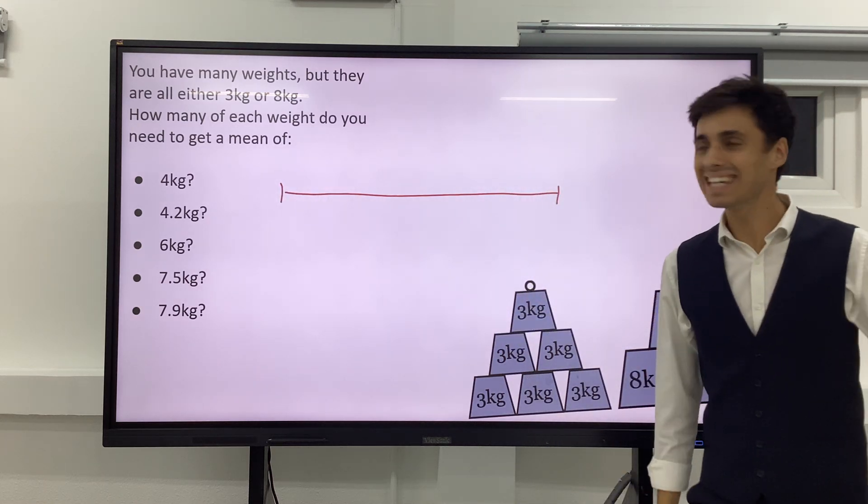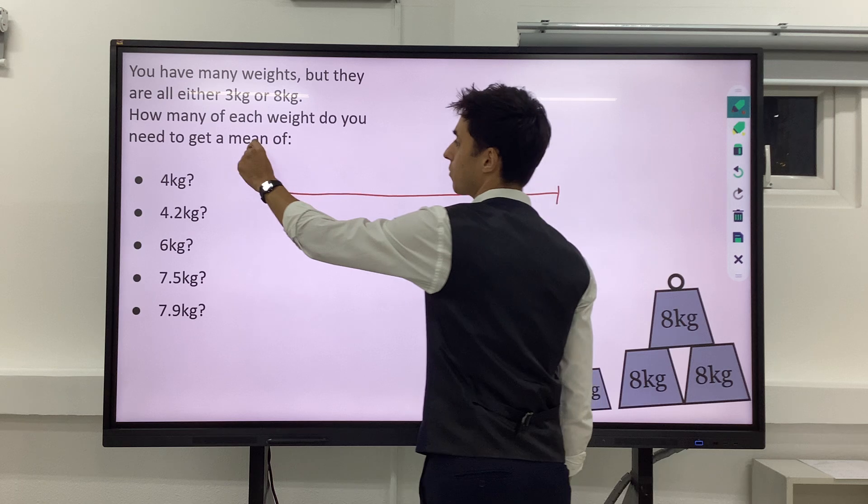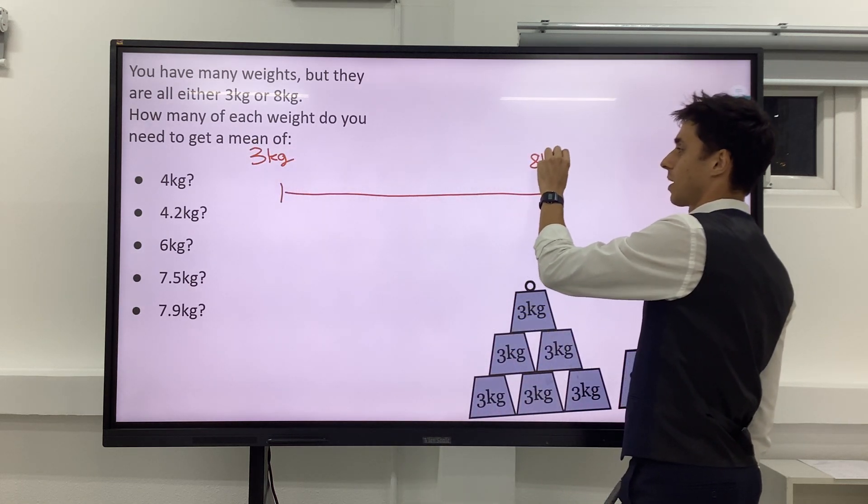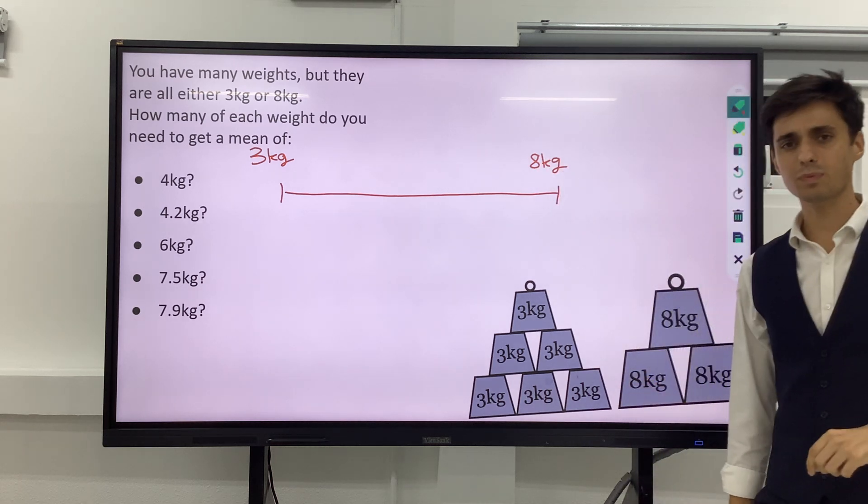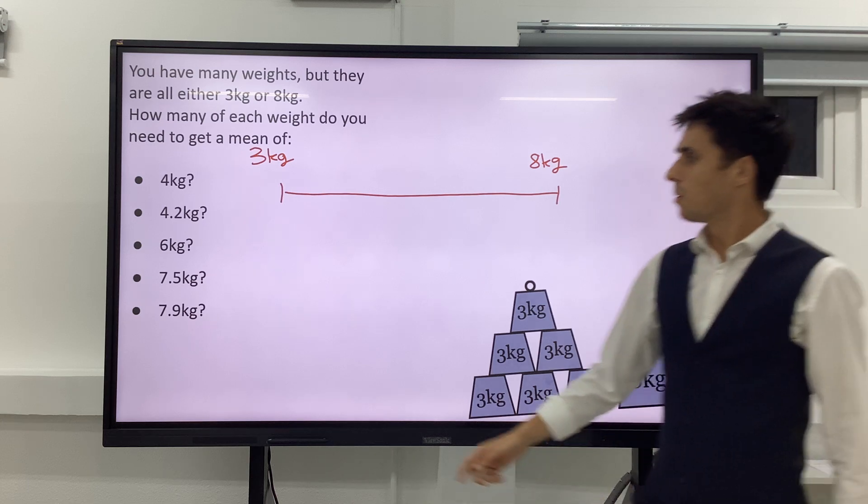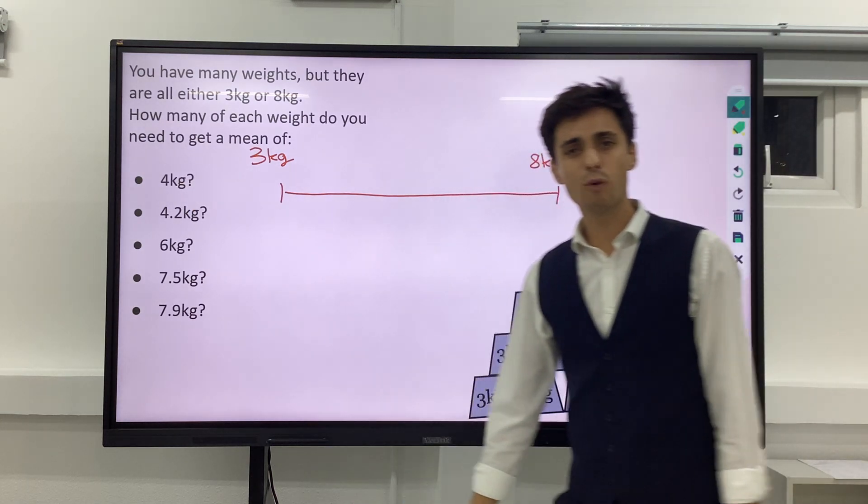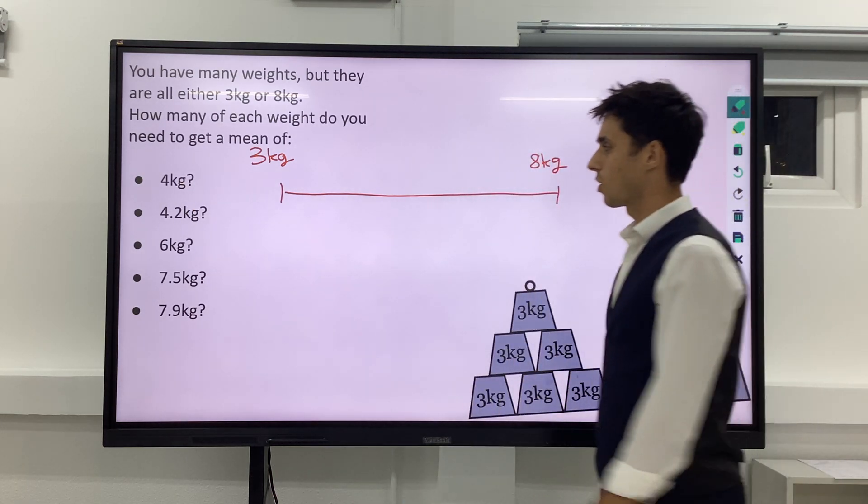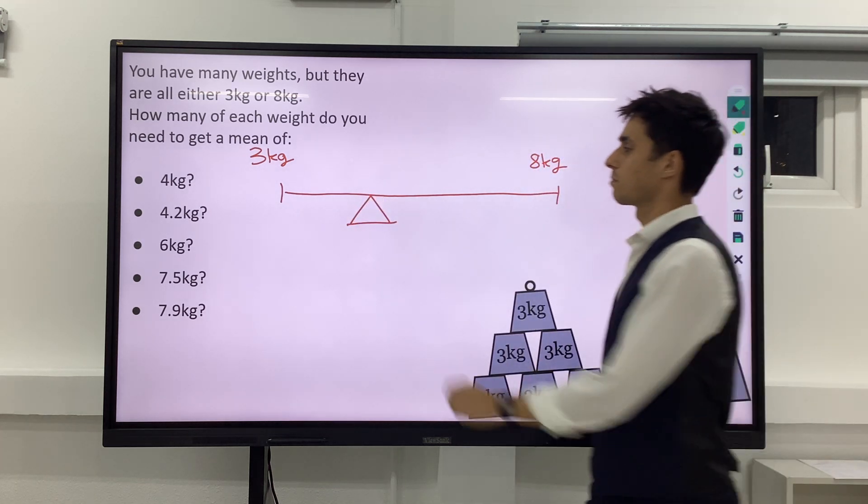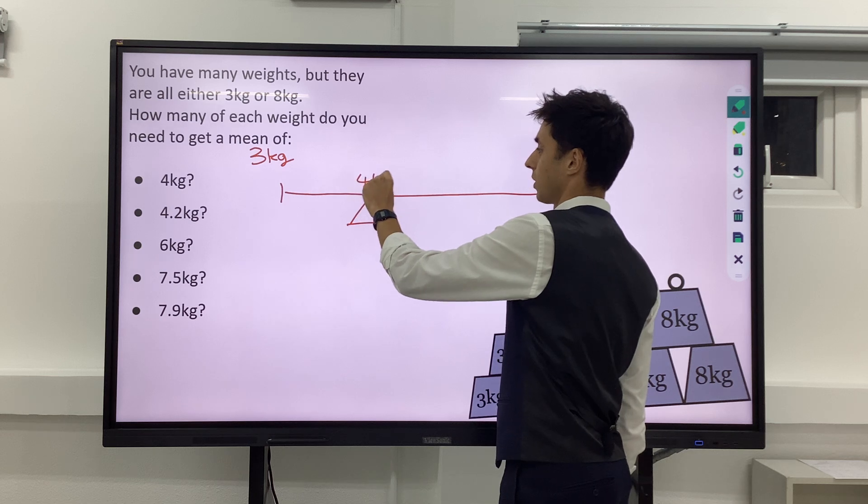And at each end, when we've got 3kg at this end and 8kg at this end, we've got no idea which number of each we need. But if we want to make 4kg as our mean overall, that means we're putting a balancing point here at 4kg.